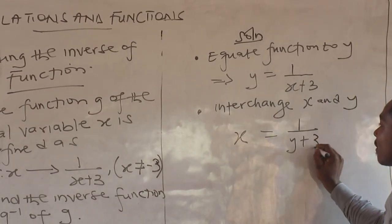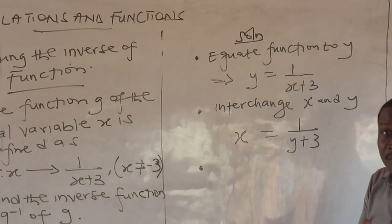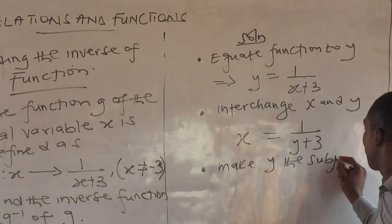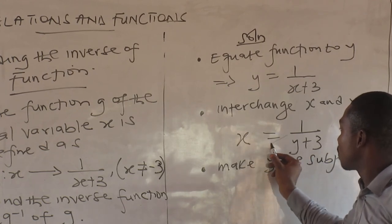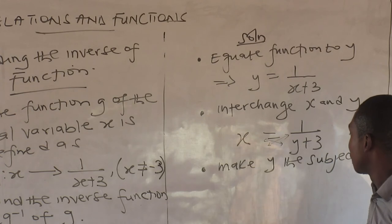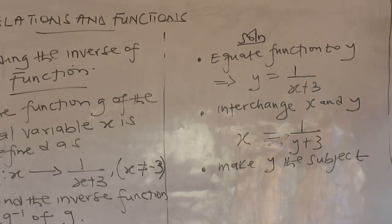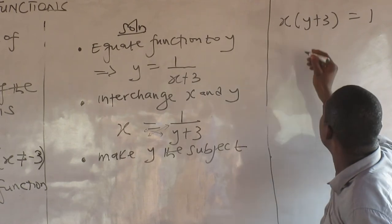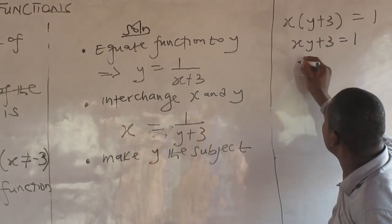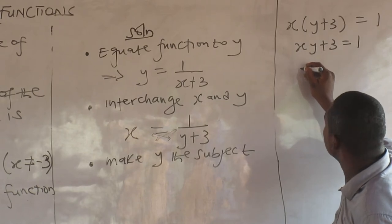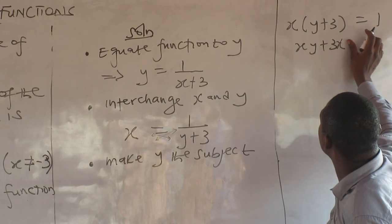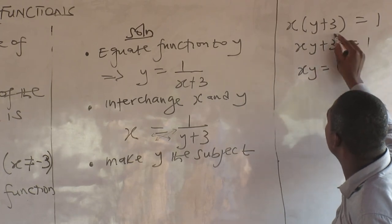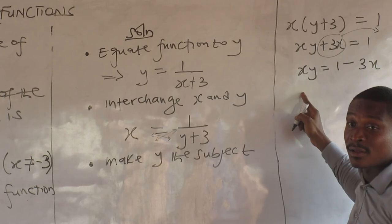After interchanging x and y, wherever I see x I put y and vice versa. Then the next step is to make y the subject. Cross multiplying: x times y plus three equals one, which gives xy plus three x equals one.